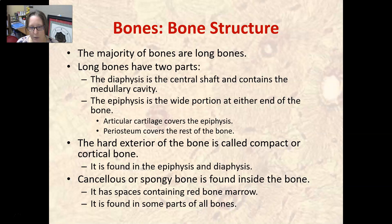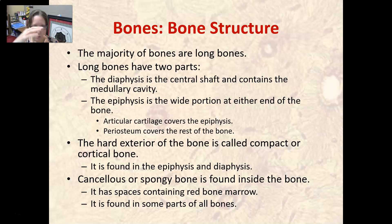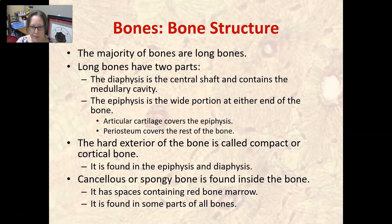The periosteum covers the rest of the bone like a sack that's stuck to it. The periosteum becomes ligaments and tendons as it attaches bone to bone and muscle to bone. Where articulation occurs, articular cartilage is present. The hard exterior of bones is called compact or cortical bone, found on the outside of both the epiphysis and diaphysis — this is what makes bones strong.